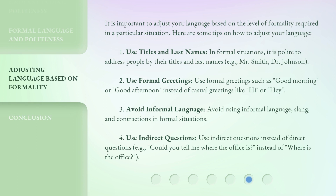It is important to adjust your language based on the level of formality required in a particular situation. Here are some tips: First, use titles and last names — in formal situations, it is polite to address people by their titles and last names, e.g., Mr. Smith or Dr. Johnson. Second, use formal greetings such as 'Good morning' or 'Good afternoon' instead of casual greetings like 'Hi' or 'Hey'. Third, avoid using informal language, slang, and contractions in formal situations. Fourth, use indirect questions instead of direct questions, e.g., 'Could you tell me where the office is?' instead of 'Where is the office?'